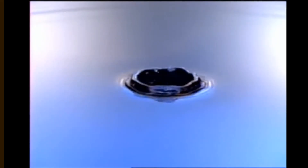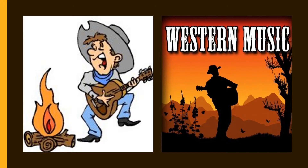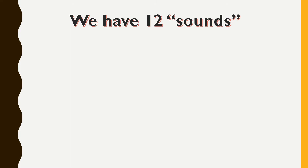Ripples in water are not at all unlike sound waves that we hear. You just can't see them — they're in the air. There are ripples and they make your eardrum vibrate, and then our brain translates that into what we perceive as sound. Music is made out of sound, and in western culture we have 12 sounds.